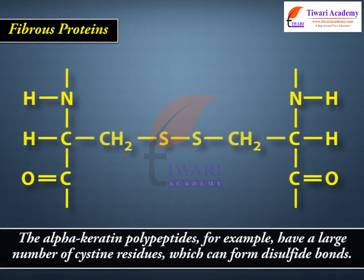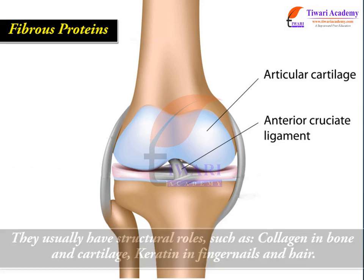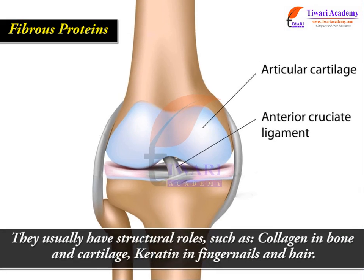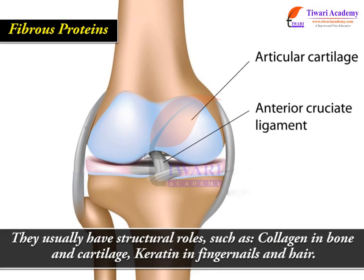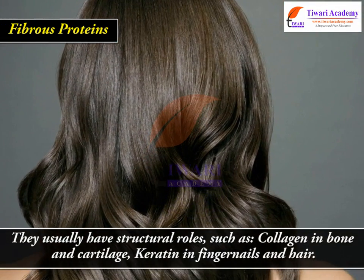The alpha-keratin polypeptides, for example, have a large number of cysteine residues, which can form disulfide bonds. They usually have structural roles, such as collagen in bone and cartilage, and keratin in fingernails and hair.